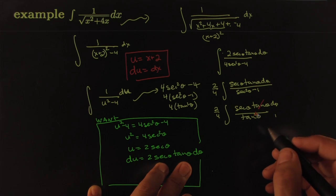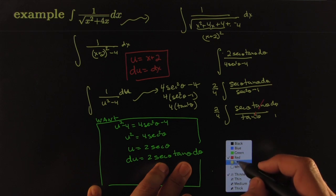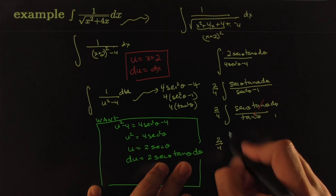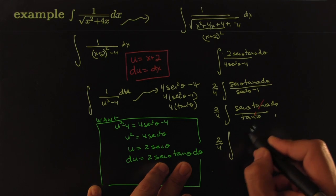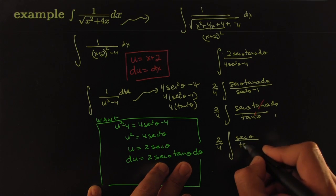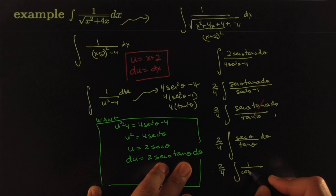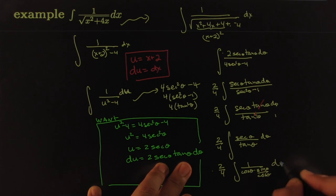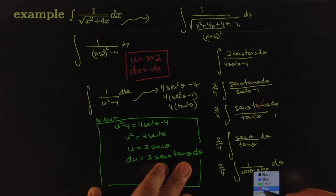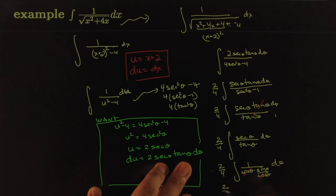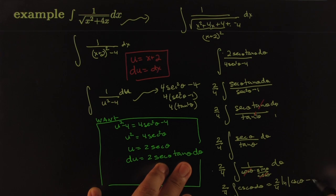After cancellation we get (2/4) ∫ secθ / tanθ dθ. Writing secθ = 1/cosθ and tanθ = sinθ/cosθ, we can cancel the cosines, leaving (2/4) ∫ cscθ dθ. That integral is famously equal to ln|cscθ − cotθ| + C.